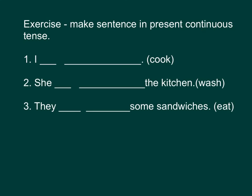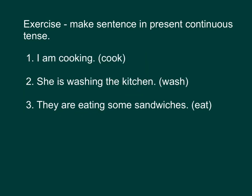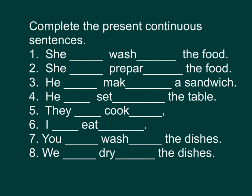我们刚学了现在进行式的句子结构，你现在就完成下面的句子，令到它成为一个完整的现在进行式的句子。让我们现在核对答案。第一条：I — I 后面是跟 am 的，要将 cook 这个字变成进行式，我们加 -ing 给他，变成 cooking。I am cooking — 我现在煮饭。第二条：She — 后面是跟 is 的，将 wash 变成进行式，我们加 ing — washing。She is washing the kitchen — 她在洗厨房。第三条：They — 后面是跟 are，要将 eat 变成进行式，我们在后面加 -ing，变成 eating。They are eating some sandwiches — 他们在吃三文治。